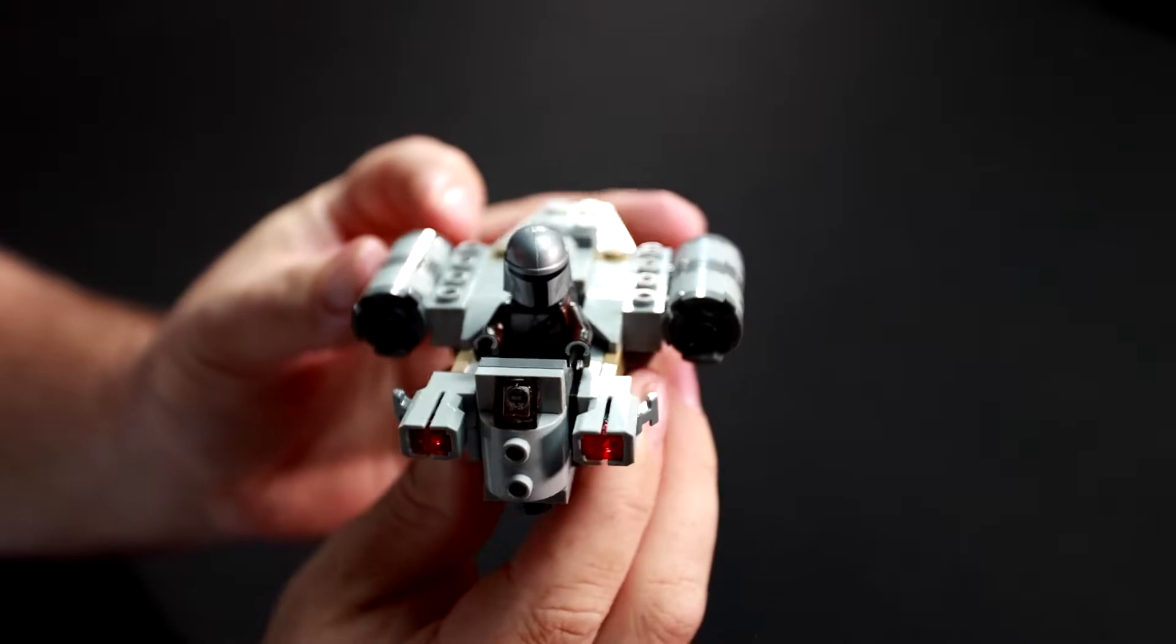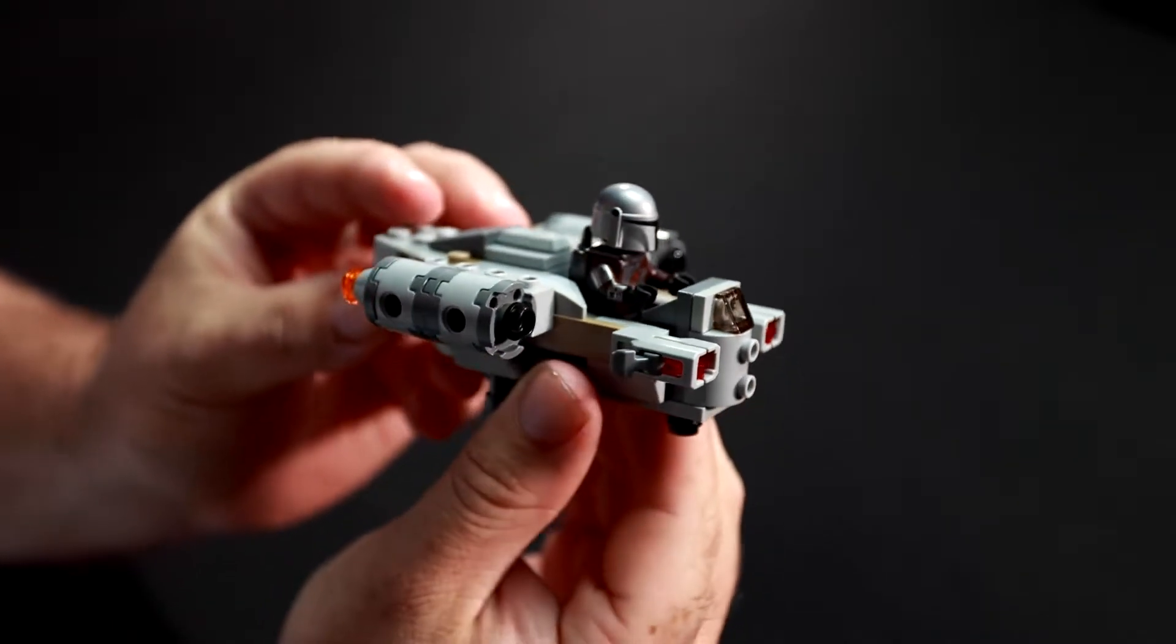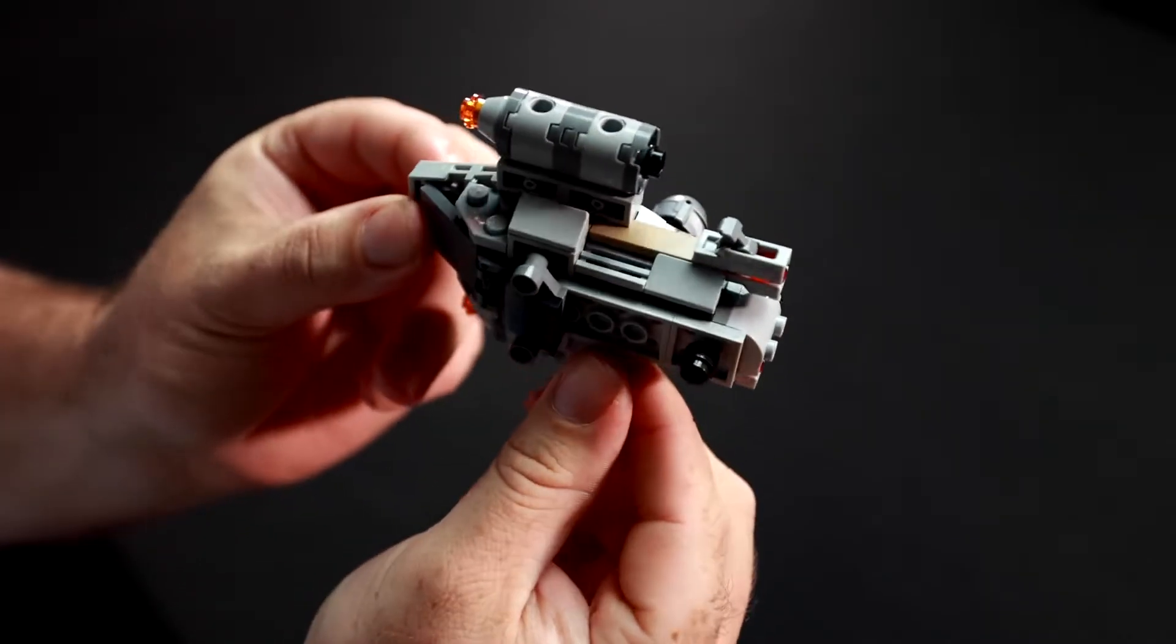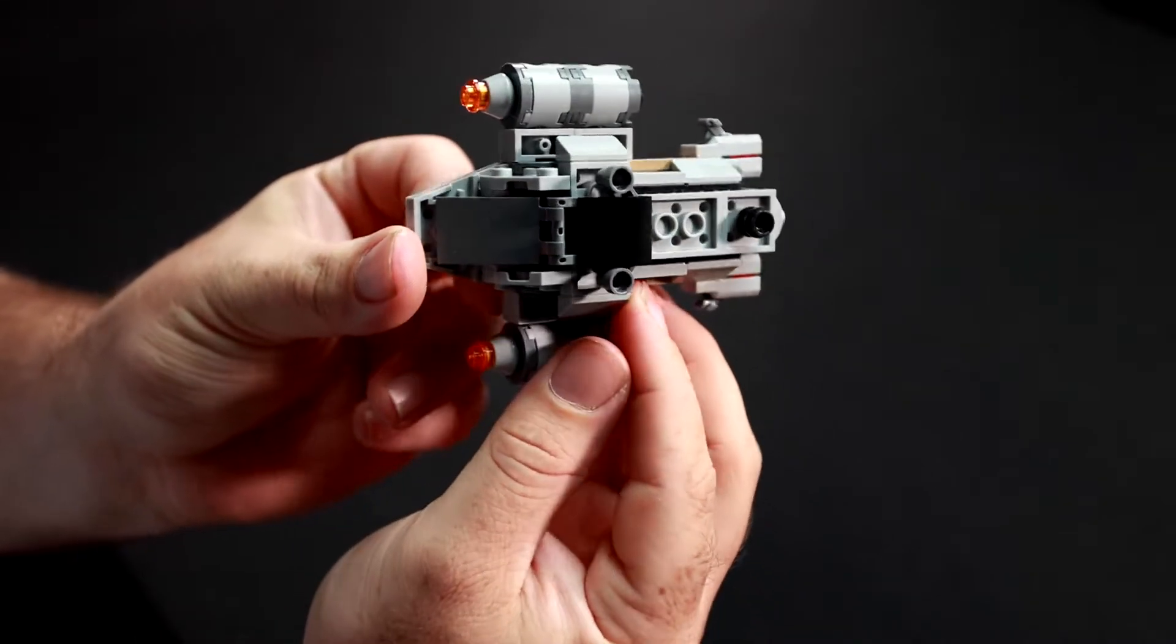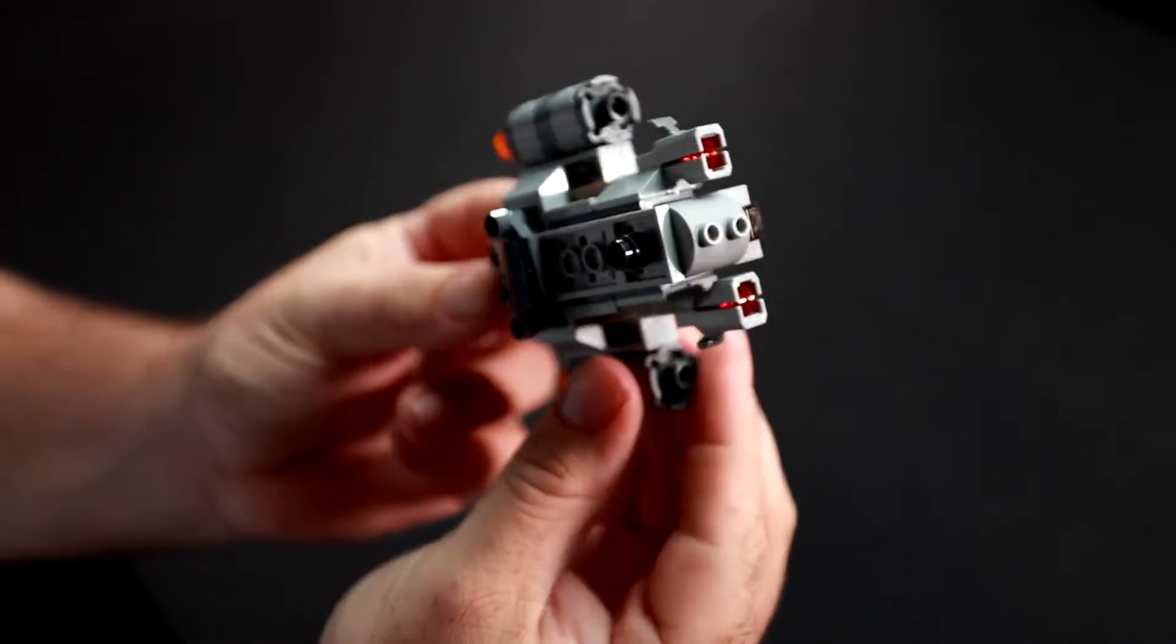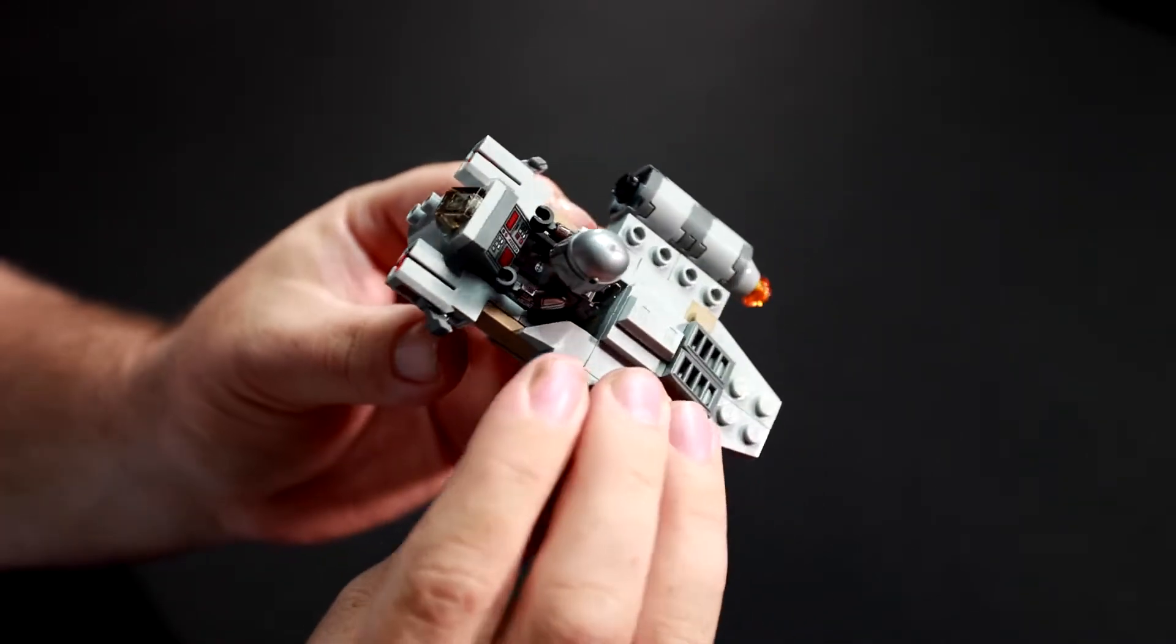And there it is, all finished. The mini version of the Razor Crest with Mandalorian mounted in the front. Pretty upset there's no Baby Yoda, but then again can't be asking too much in these mini sets. Let's get into the reviews.